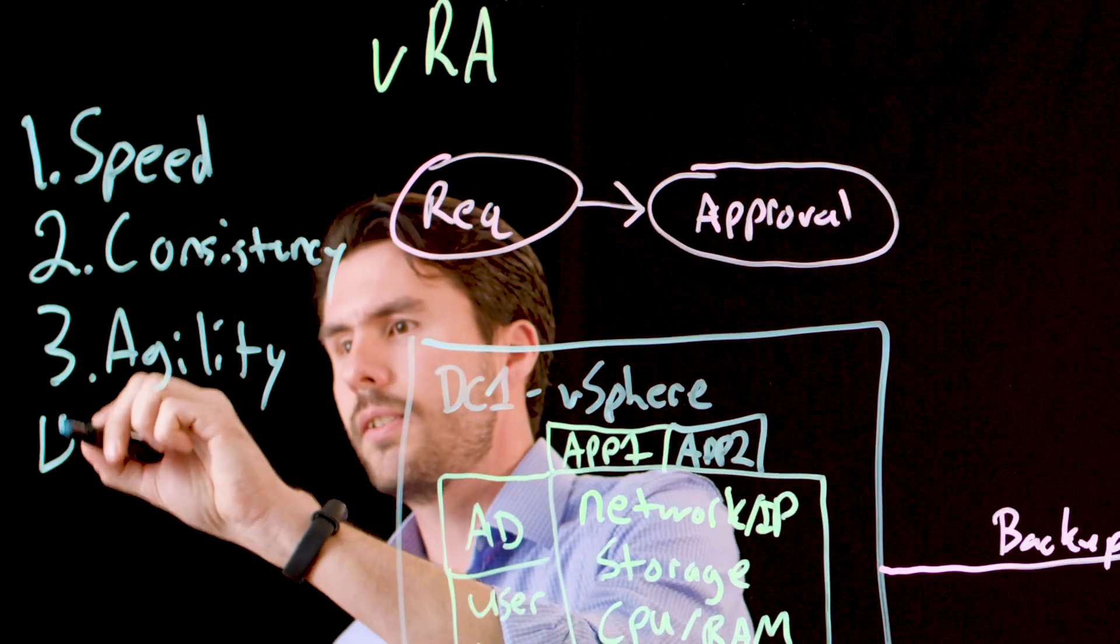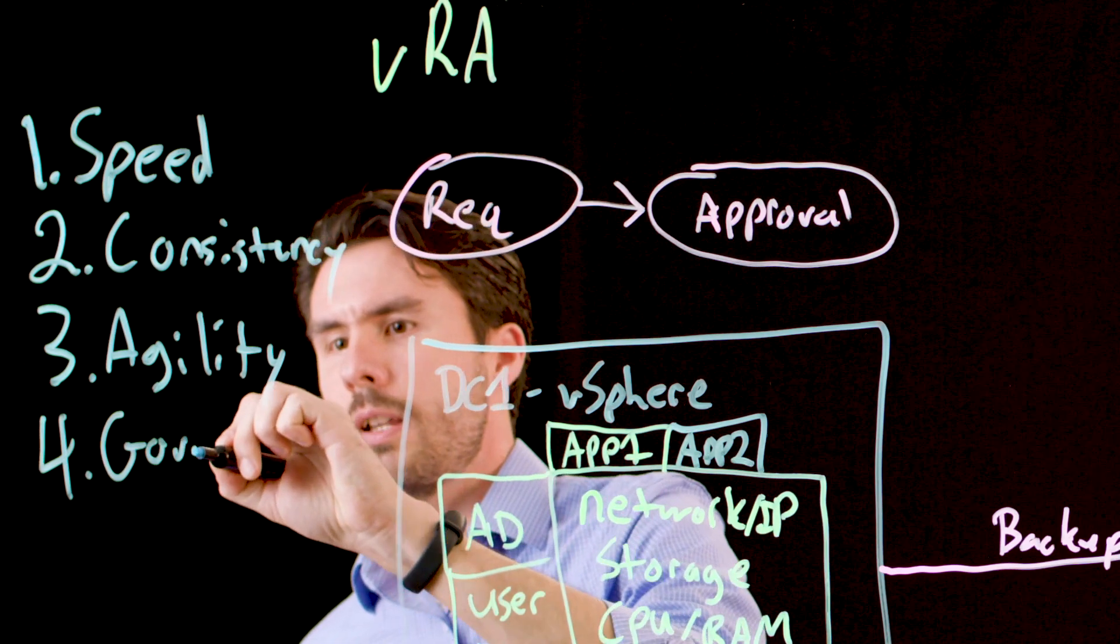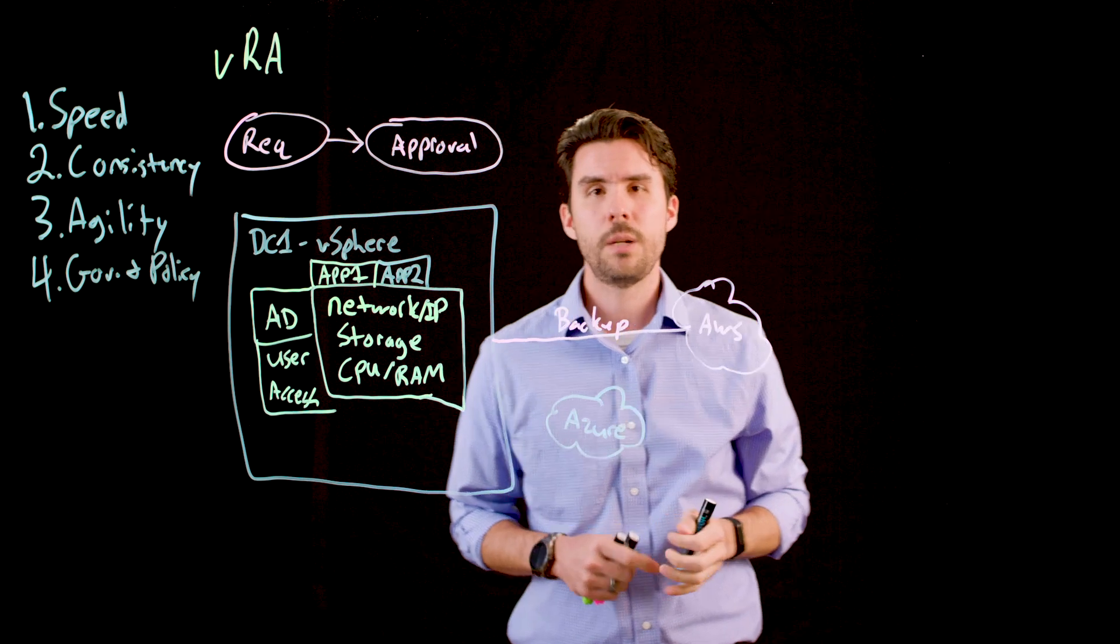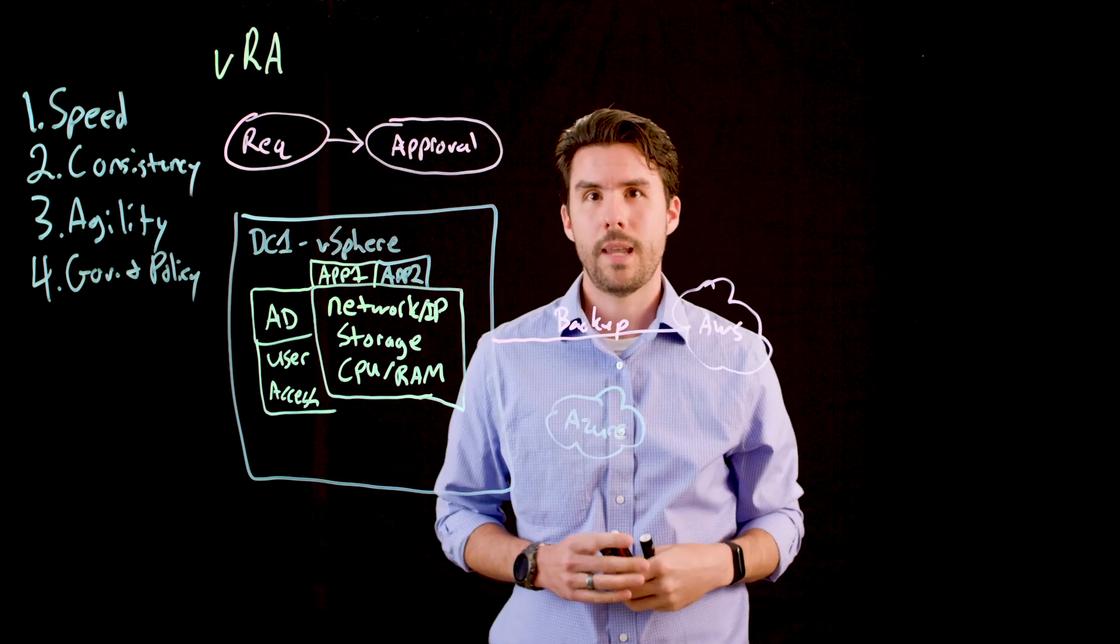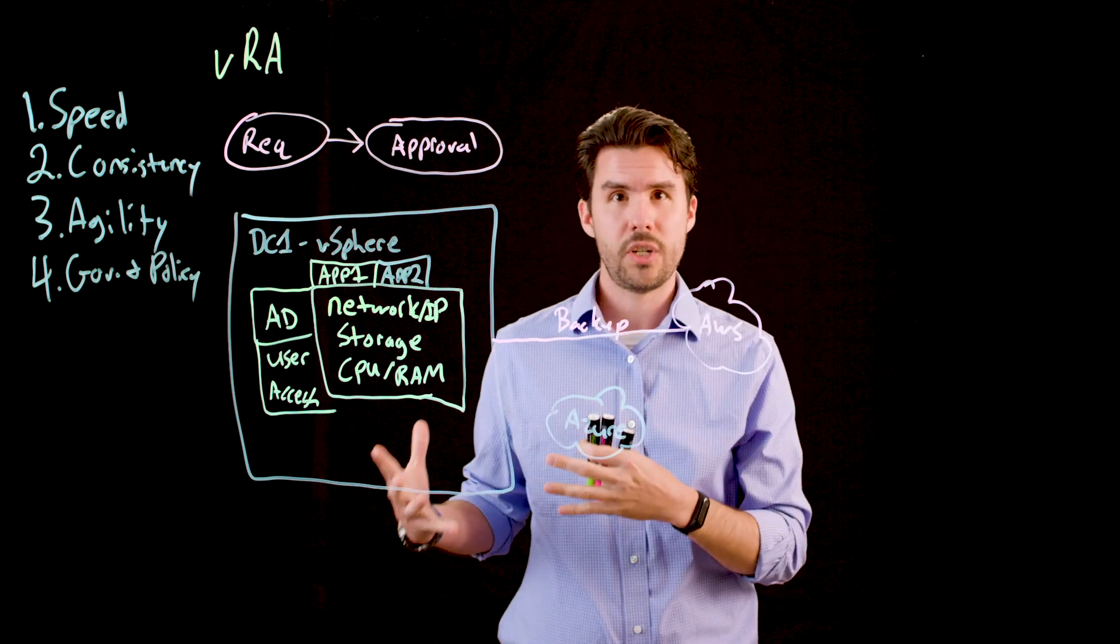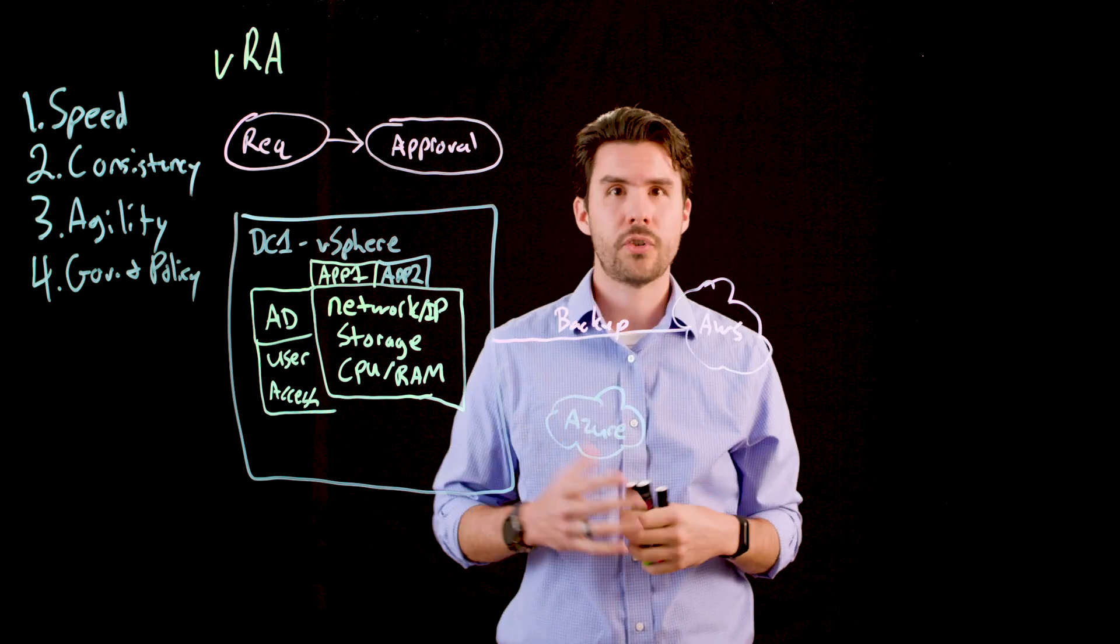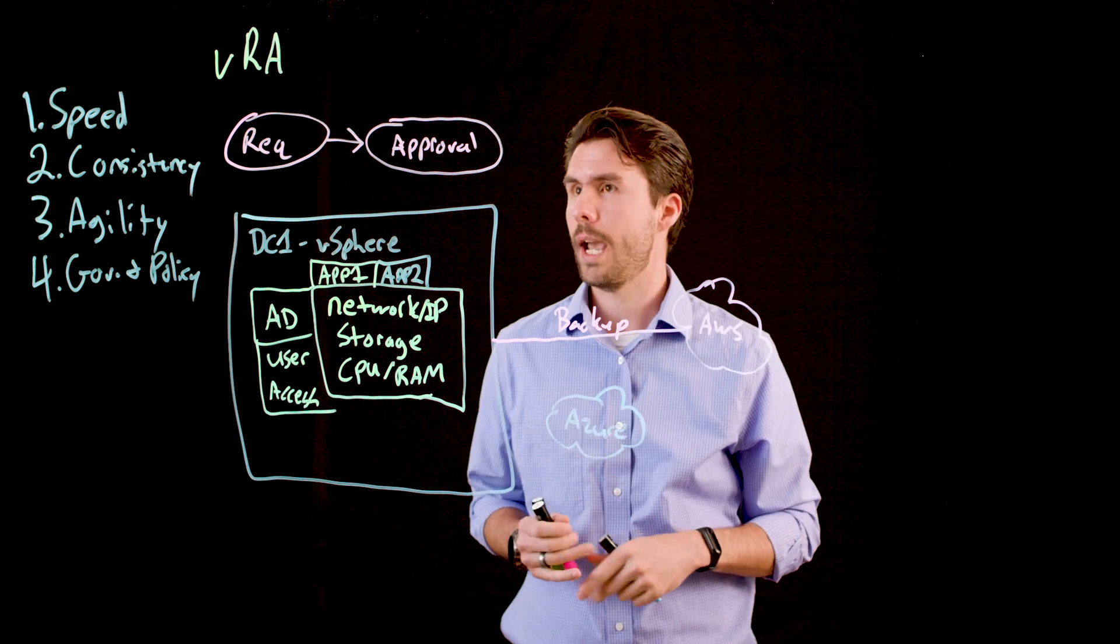The fourth thing that VRA brings to the table is governance and policy. And that's a really big one. You need to be able to control who can access what things, how much of those resources each individual user or user group can consume, and what kind of approvals are set up on top of that. Governance and policy allows you to do that.